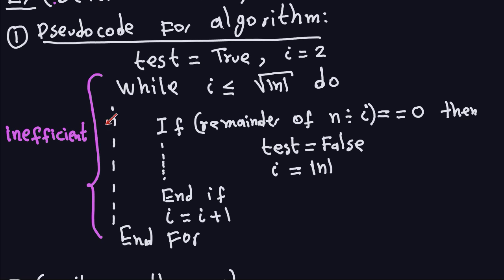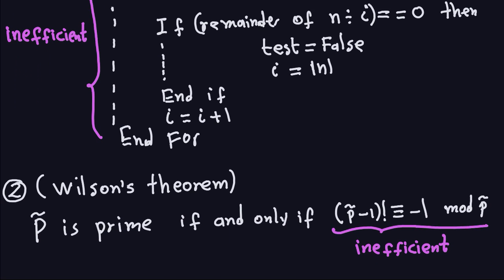You'll notice I labeled this method 'inefficient.' It works fine when n is small, but for the large numbers used in cryptography this will take a very long time. That's why we call it inefficient — but it is deterministic: it will always give you the correct answer with no doubt.